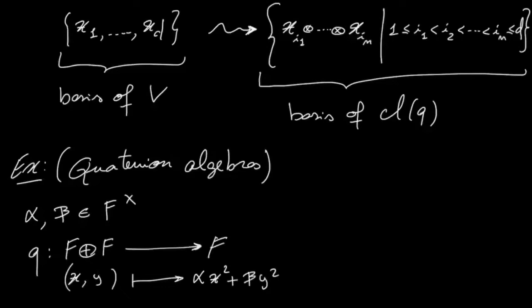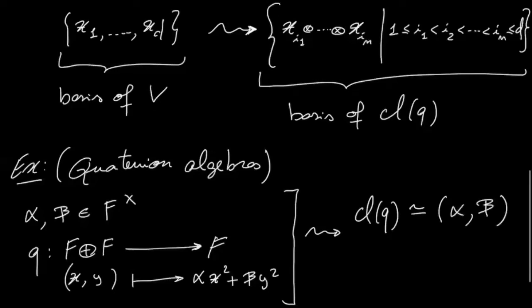Then what I claim is that the associated Clifford algebra, associated to this quadratic form, it turns out to be actually equivalent to the quaternion algebra alpha beta. So let's see why that is the case.